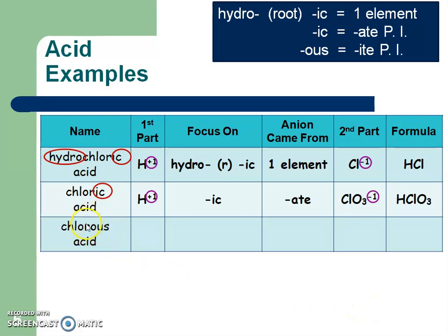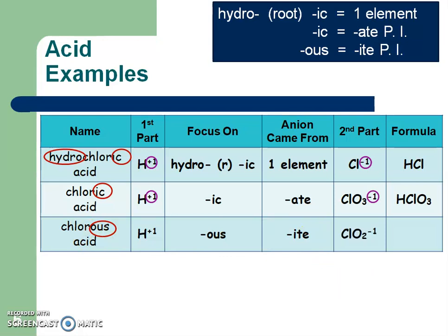Chlorous acid. Again, the first part is H plus 1 since it says acid. I'm going to focus on the ous ending. Coming up to my cheat sheet: ous came from an ite polyatomic ion. So what polyatomic ion did it come from? Chlorite. Chlorite is ClO2 with a negative 1 charge. Like an ionic compound, I'm going to focus on those numbers — 1 and 1 — and just rewrite those parts. Pause the video, fill in your chart, and maybe use different colors or shapes to focus on the different things I point out.